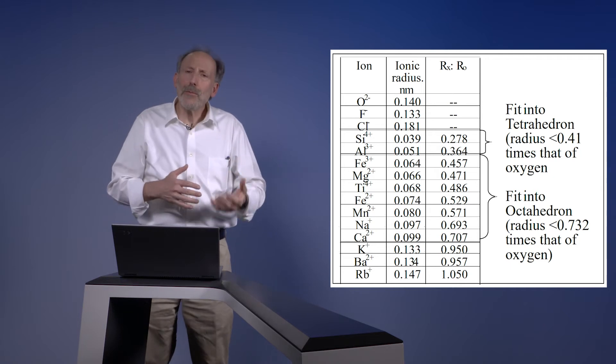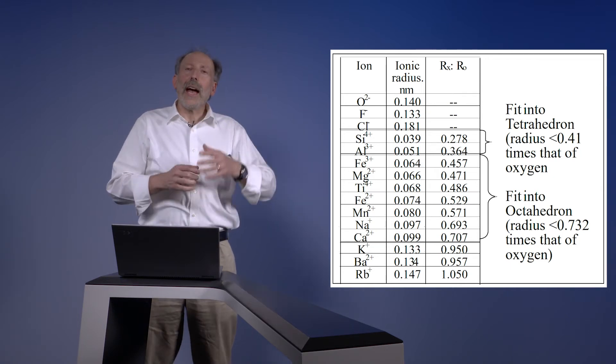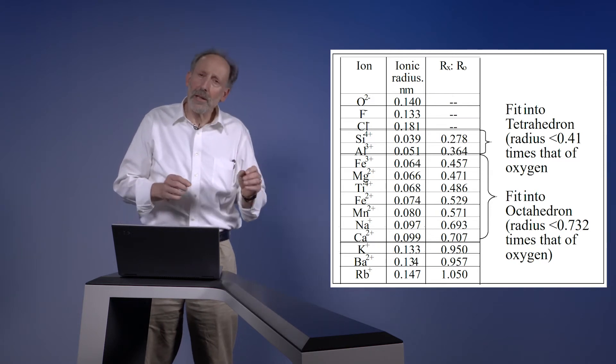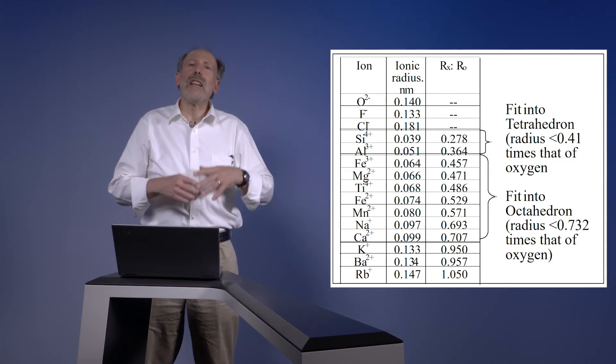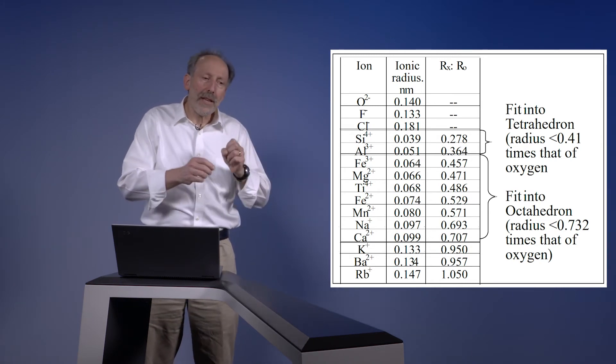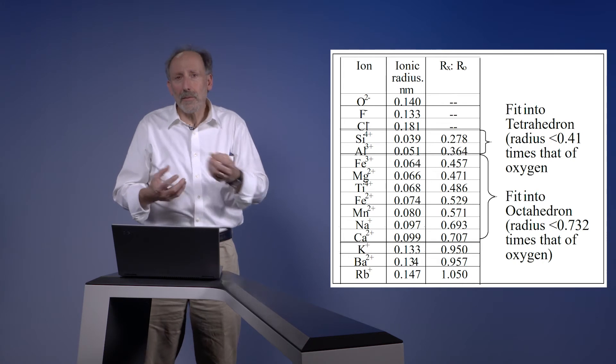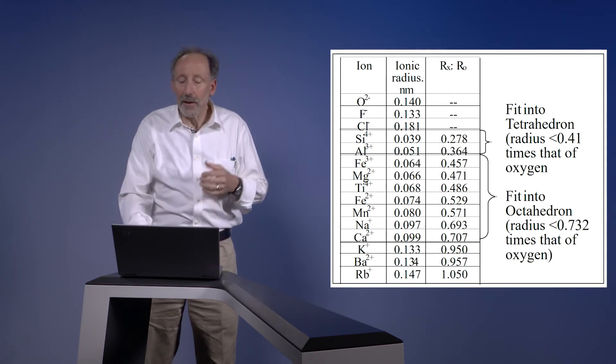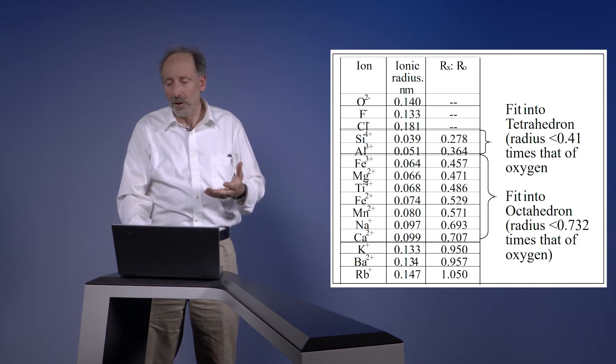So this process of isomorphic substitution has its limitations, and it fits in primarily in octahedra, but it can also happen a little bit in the tetrahedra, and it fundamentally changes the chemistry. So in the formative environment of these clays, the abundance of these alternative minerals really dictates a lot of the chemistry of the clays and the other minerals that will come out of that system.